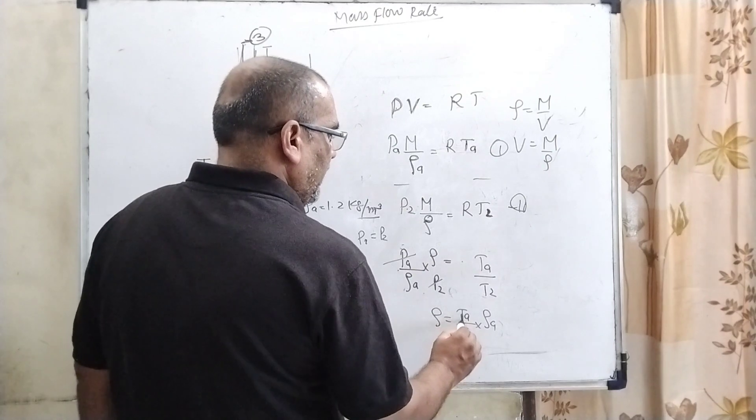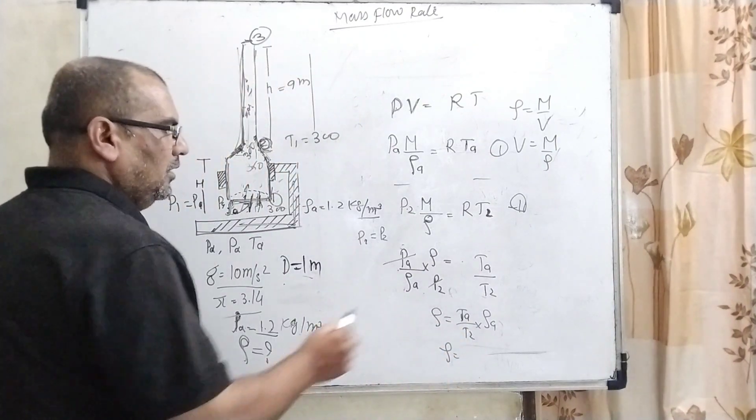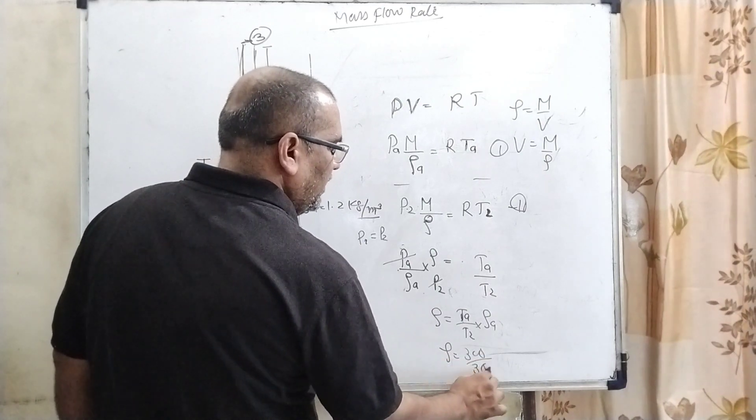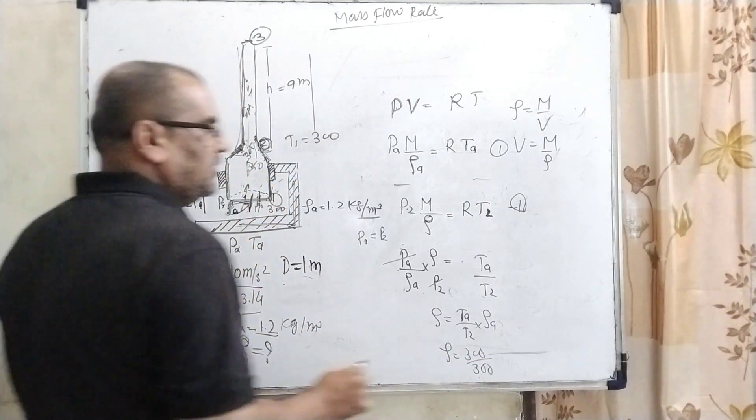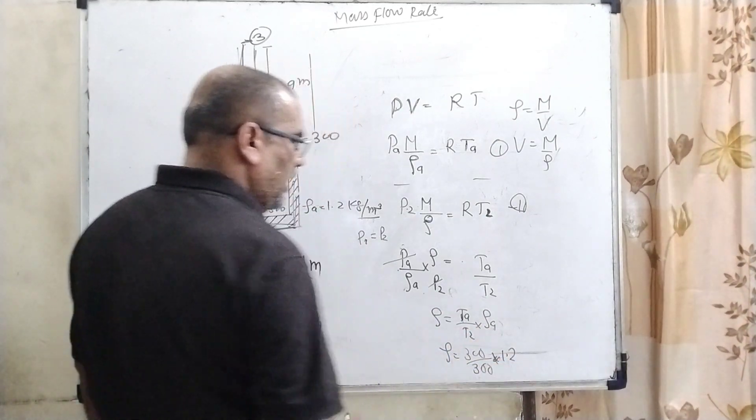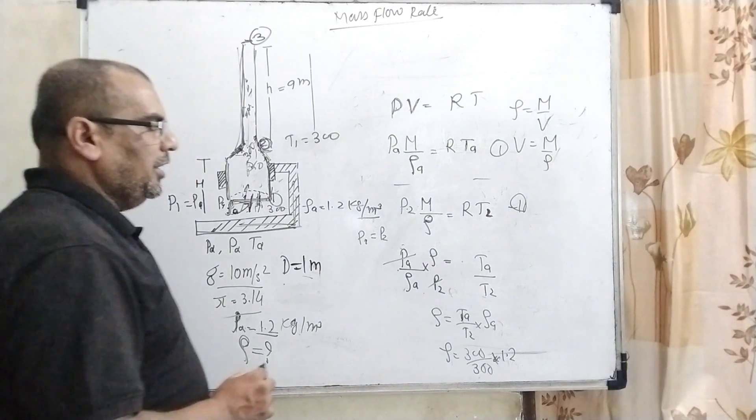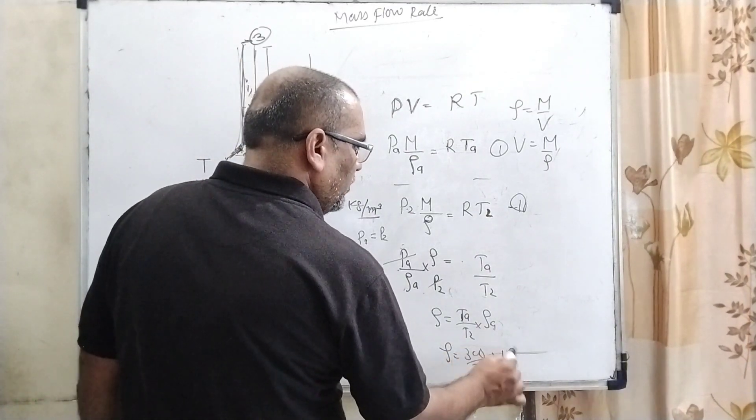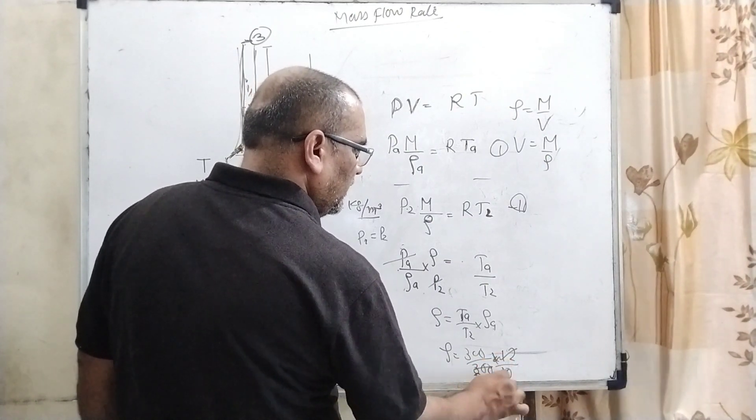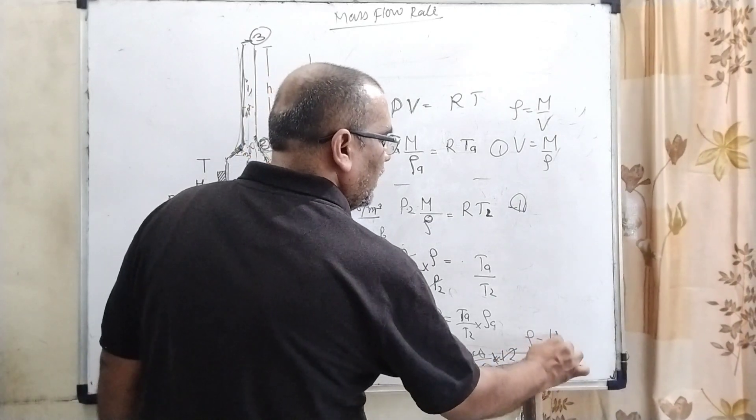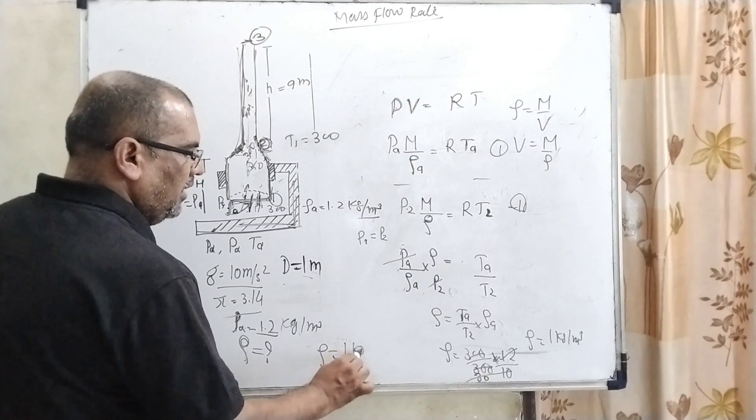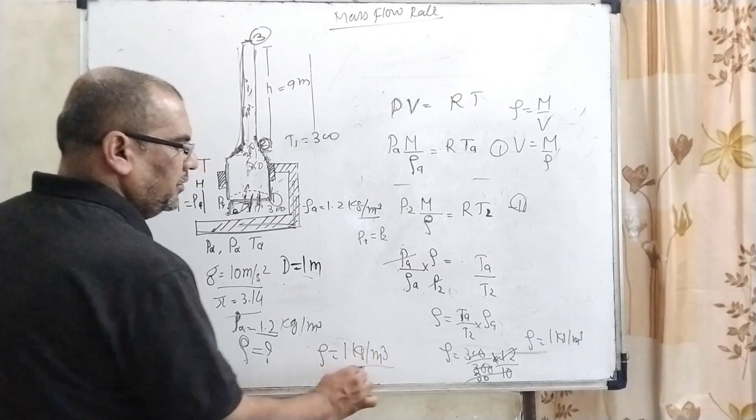You can see that the pressure throughout this furnace is constant, so P_A equals P_2, therefore they cancel out. Rho equals T_A over T_2 times rho_A. Here T_A, the temperature at the bottom, is 300. Inside the furnace it's heated to 360. And rho_A is given as 1.2 kilogram per meter cubed. After canceling, rho equals 1 kilogram per meter cubed. So we get the density 1 kilogram per meter cubed, clear.